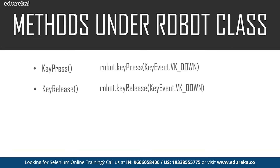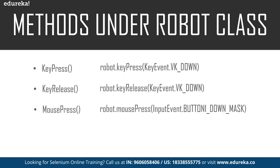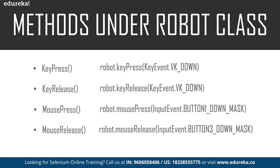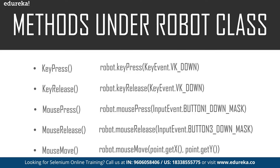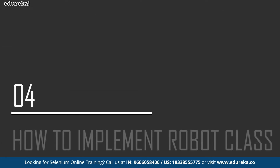Now let's look at the methods used to handle mouse functions. The mousePress method is used to press the left button of the mouse. The mouseRelease method is used to release the pressed button of the mouse. Finally, the mouseMove method moves the mouse pointer to specified X and Y coordinates — the command is robot.mouseMove() with the X and Y axis coordinates. These are the methods that control mouse and keyboard functions.